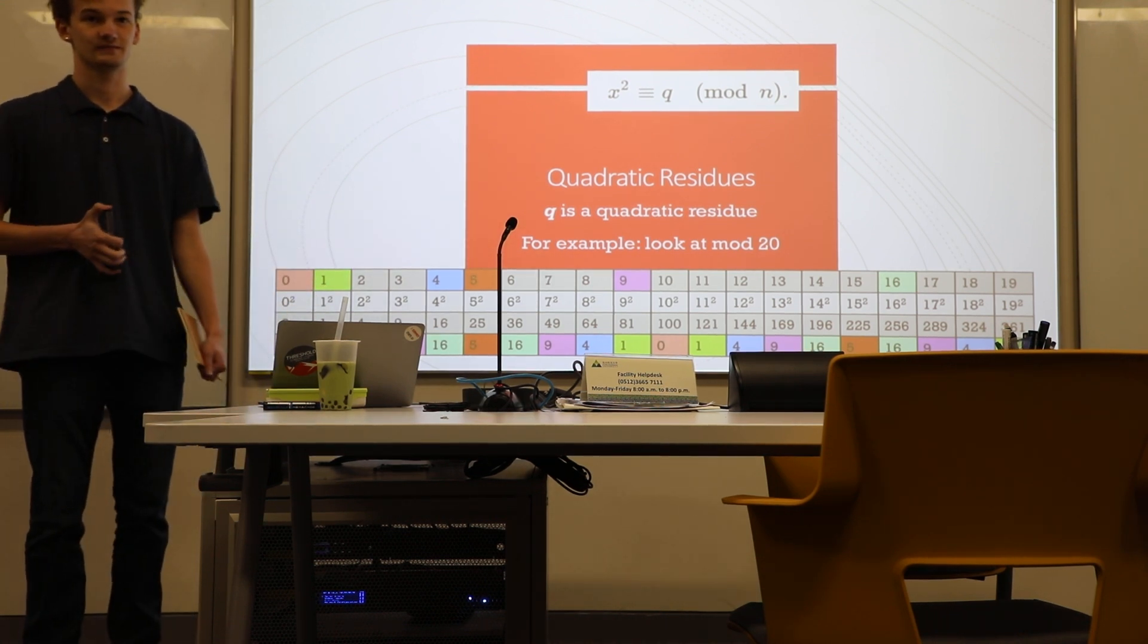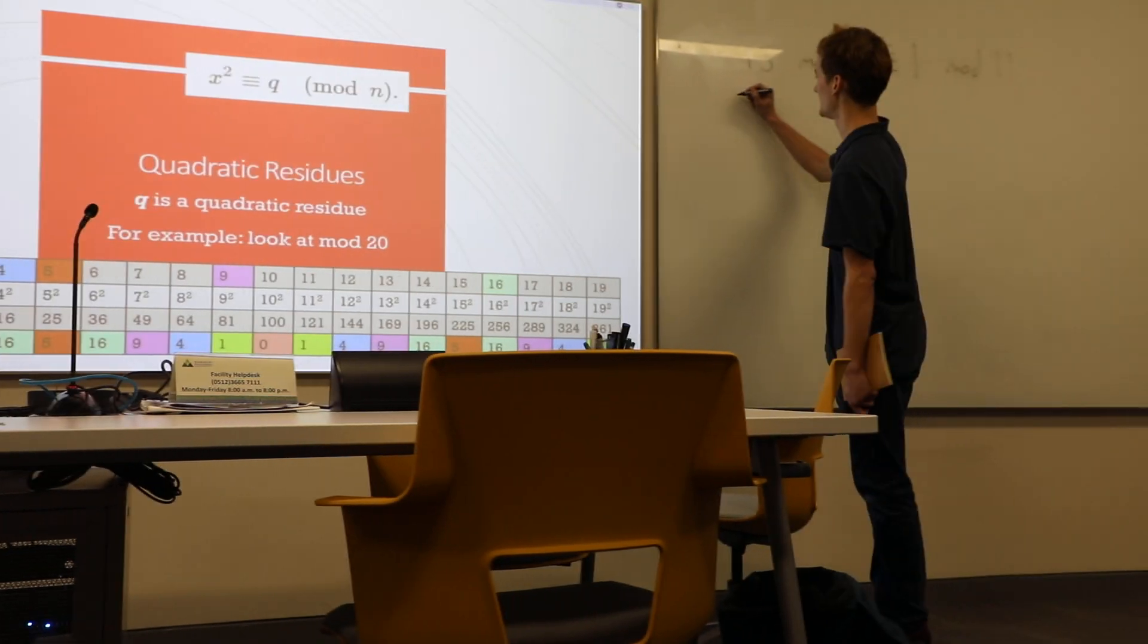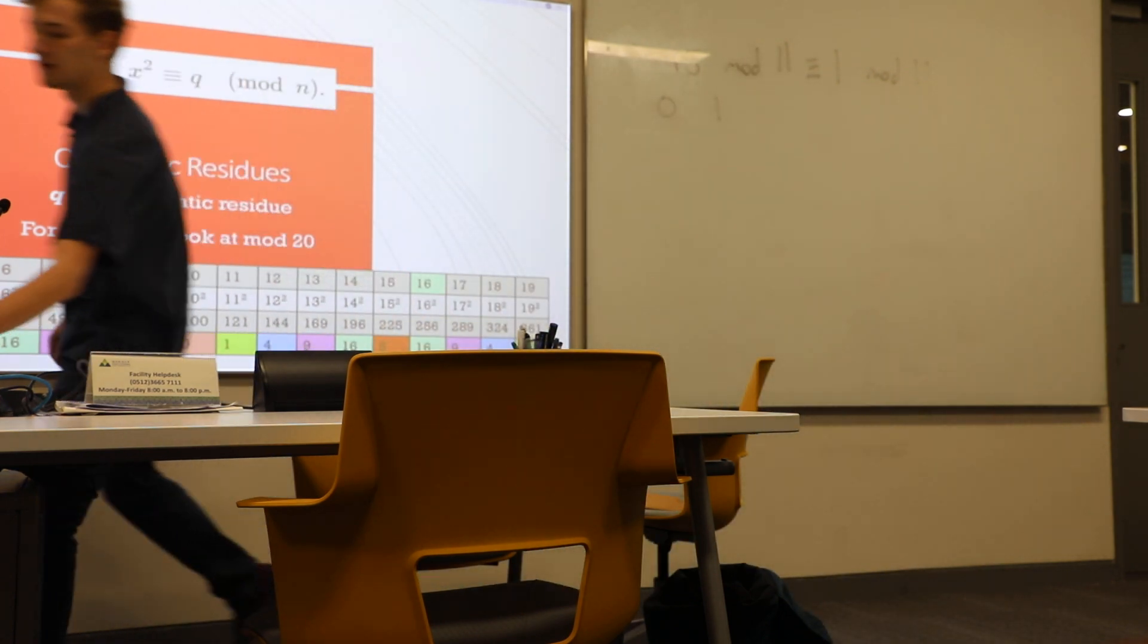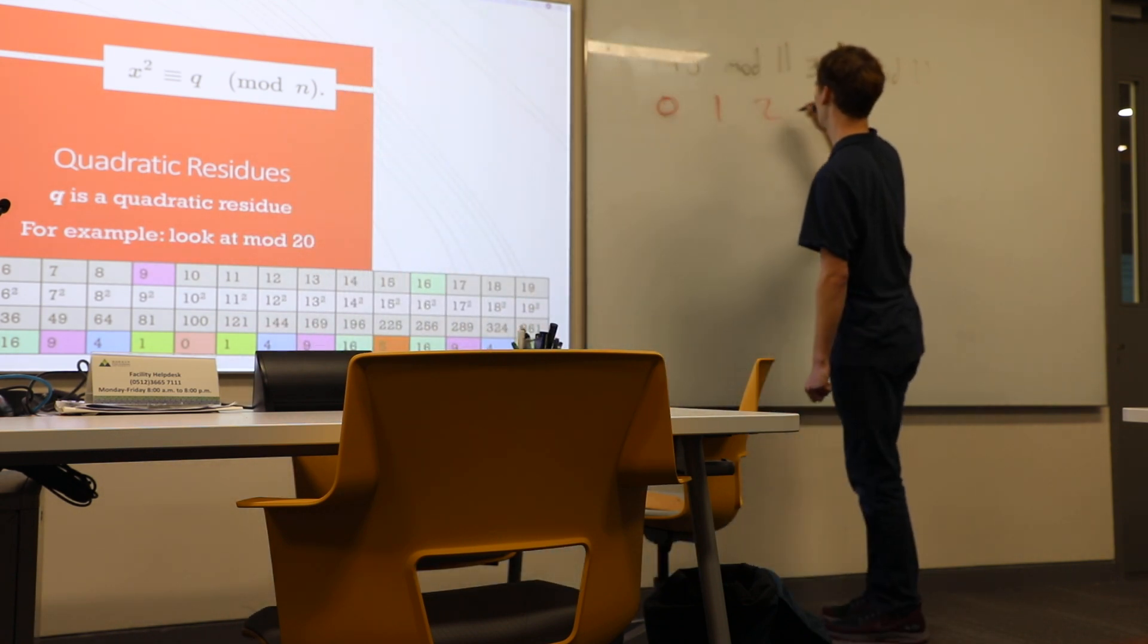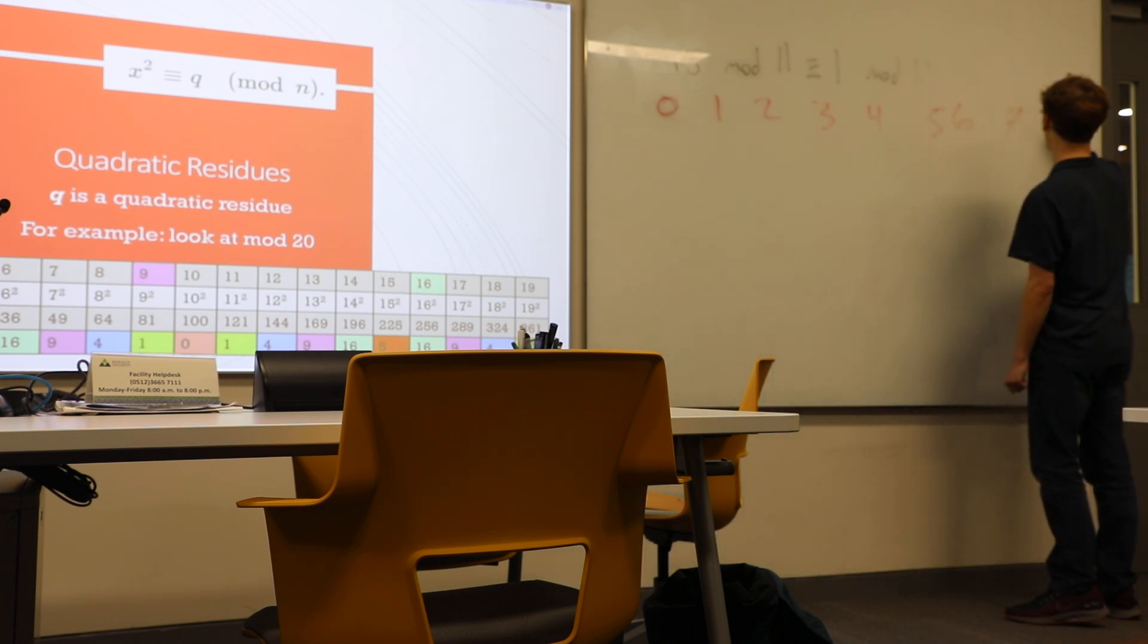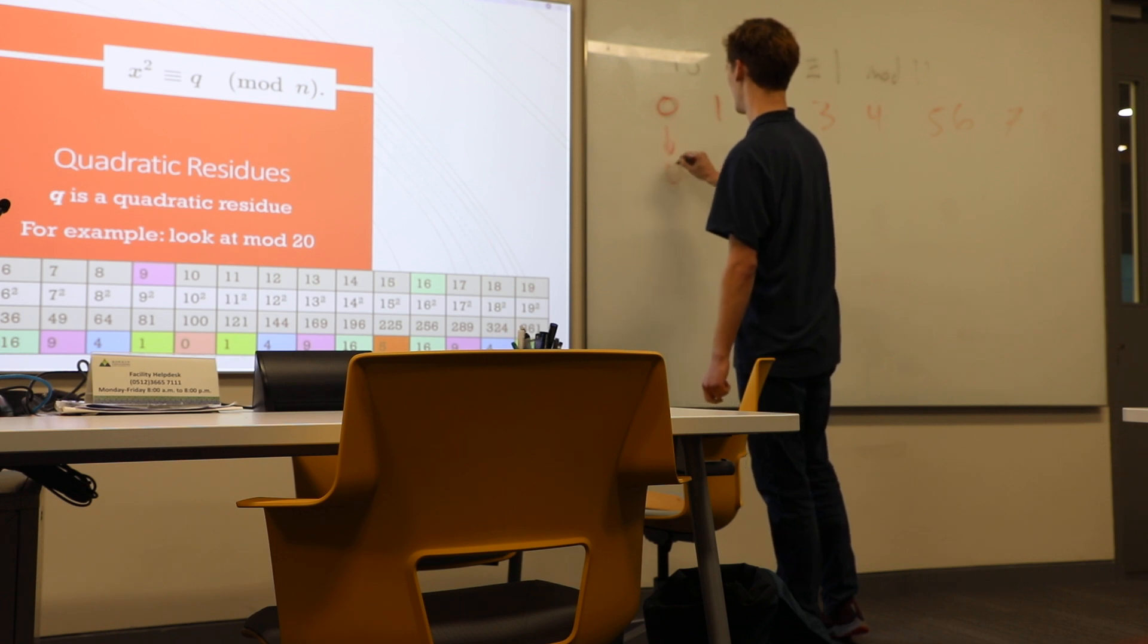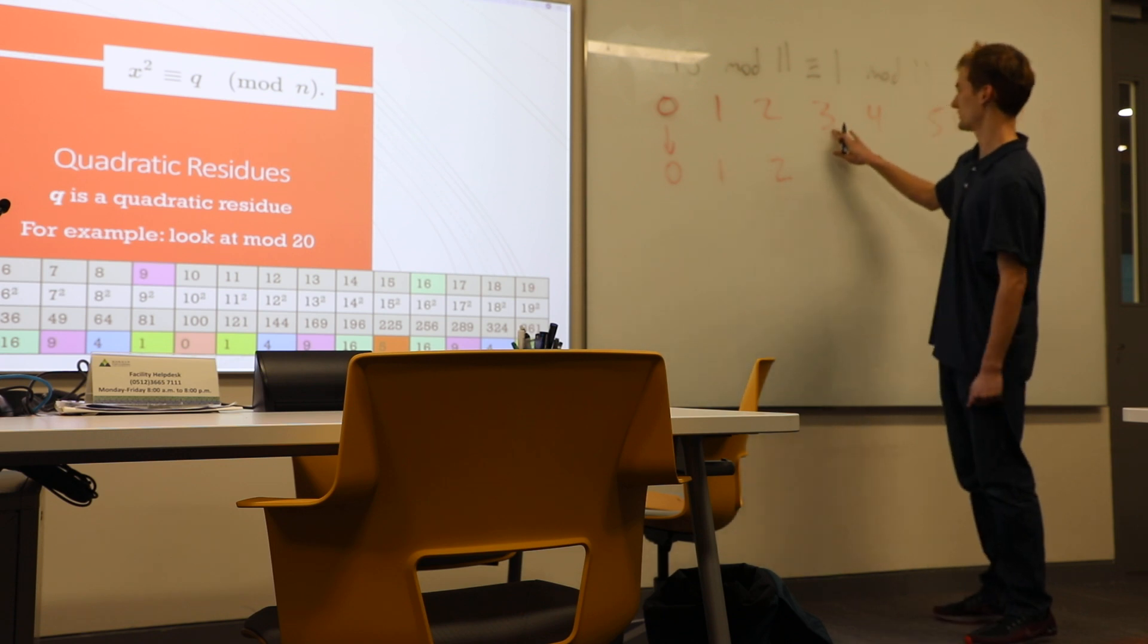Can you give an example with mod 8, for example? Yeah. So if you go 0, 1, 2, 3, 4, 5, 6, 7, 8... So then we square everything. So this goes to 0. This goes to 1. 2 squared is 4.